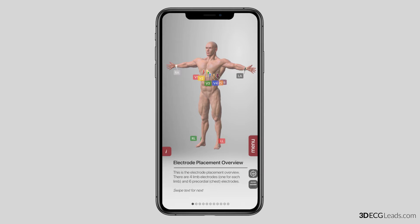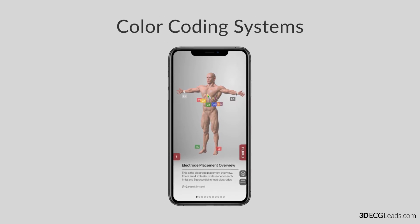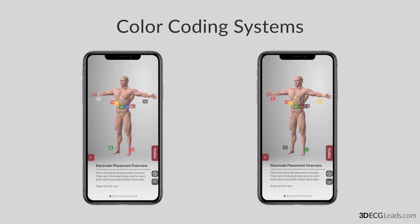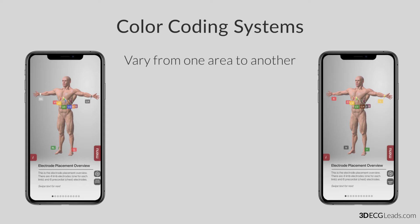These 10-wire leads come in two major standard colors and names, also known as the color coding systems. The color coding systems vary from one area to another. They are known as the American Heart Association, AHA, which is used in the USA, and the other is the International Electrotechnical Commission, IEC, which is used in Europe.